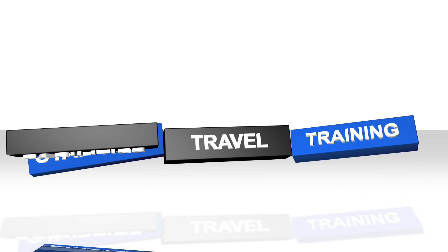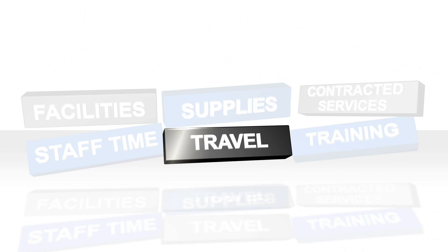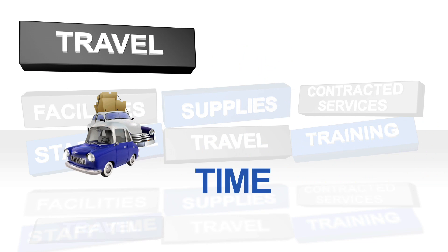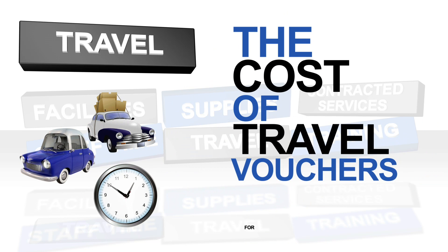Let's go through all the ingredients required to run your in-home service. There's staff time, travel, training, facilities, supplies, and contracted services. That's a great start. An ingredient like travel could be broken down further into the cost of the car to the agency, gas, time spent traveling, and the cost of travel vouchers for participants, if you provide those.